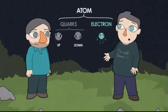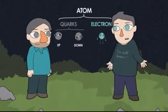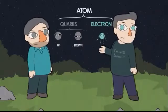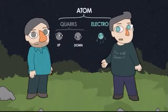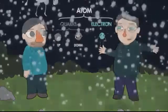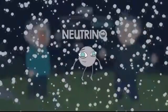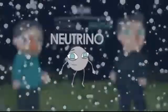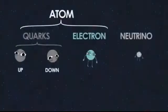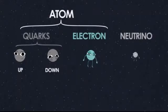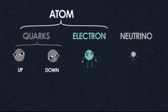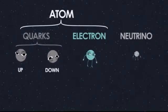Almost everything in the universe is made of those things. But there are other fundamental particles — there are trillions of neutrinos passing through us right now. So we've got the up and down quarks, electrons, and neutrinos. Is that it? Not even close. It turns out there are a lot more fundamental particles than that.